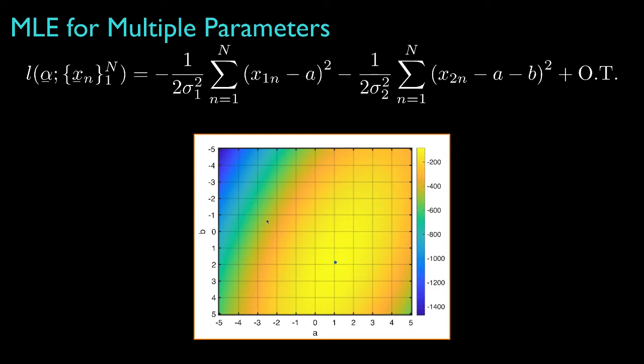Now the maximum of the log likelihood computed by solving the system of equations is shown by the blue dot, and it corresponds to a hat equal to 1.05 and b hat equal to 1.87. So, unsurprisingly, the estimates are not exactly the true values of the parameter because we only had 100 realizations, but we can see that we come close.